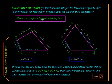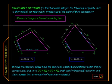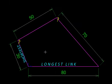Here is one such mechanism. Let us test it. So the shortest link and the longest link add up to 30 plus 80 equals 110, and the other two links, 50 plus 70, add up to 120. So Grashof's criterion says we should have a crank here.